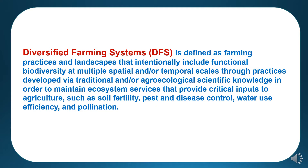What is diversified farming system? Diversified farming system is defined as farming practices and landscapes that intensely include functional biodiversity at multiple spatial or temporal scales through practices developed via traditional or agroecological scientific knowledge in order to maintain ecosystem services that provide critical inputs to agriculture such as soil fertility, waste and disease control, water efficiency and pollination.